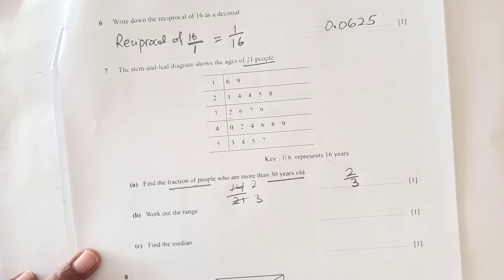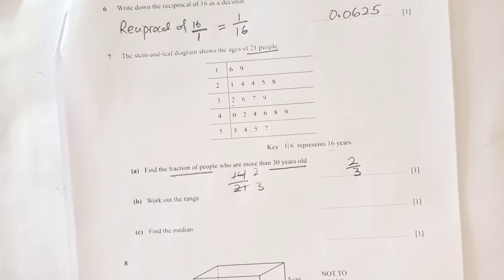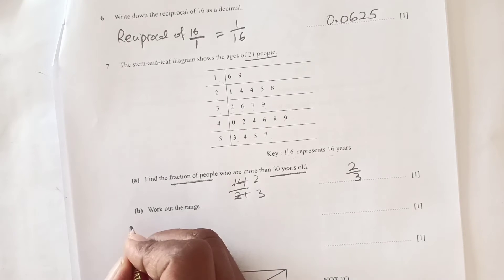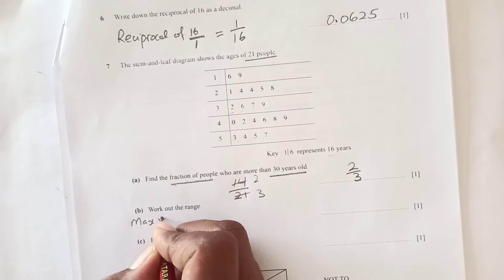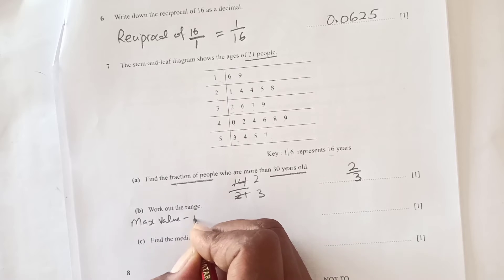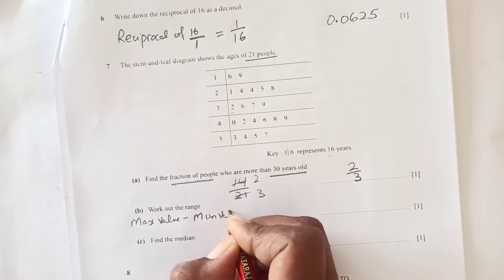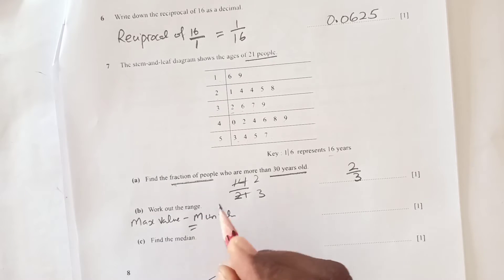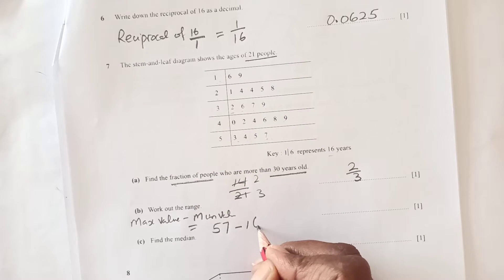Work out the range. Range is the maximum value minus the minimum value. Maximum value is 57, so 57 minus 16 is 41.